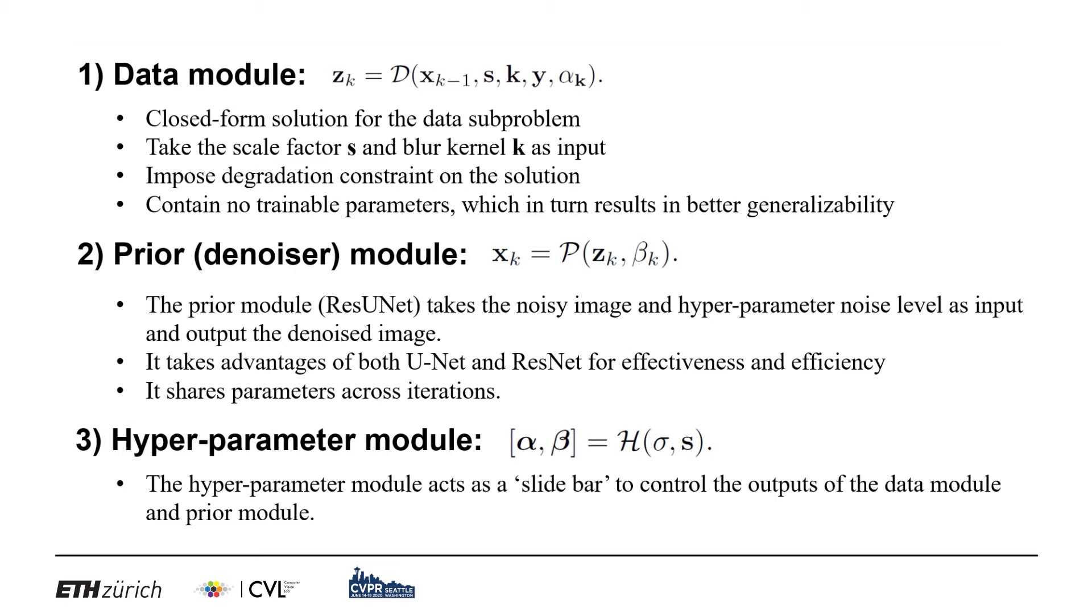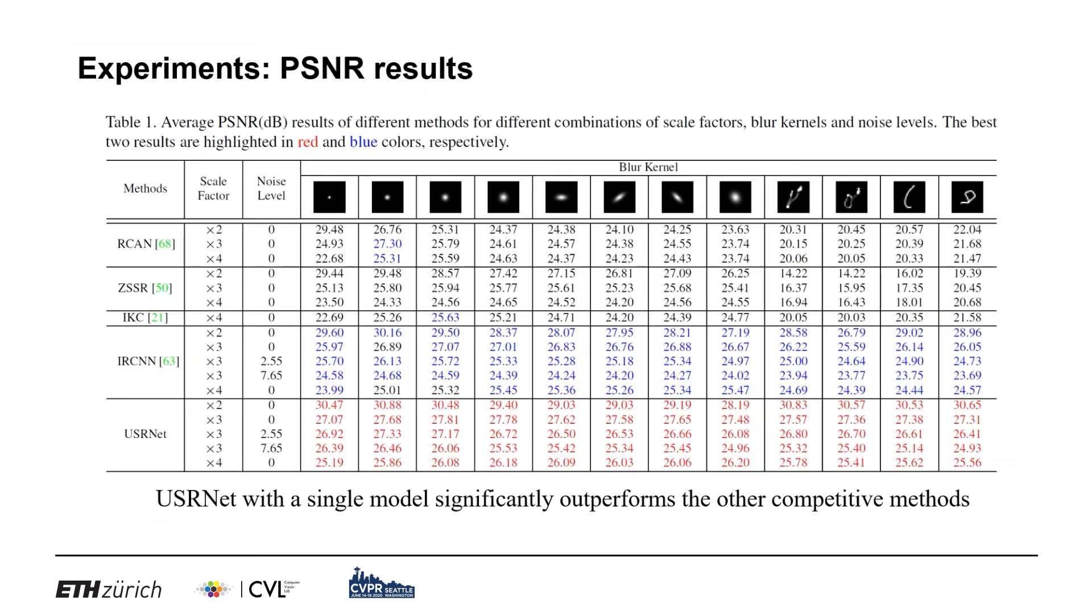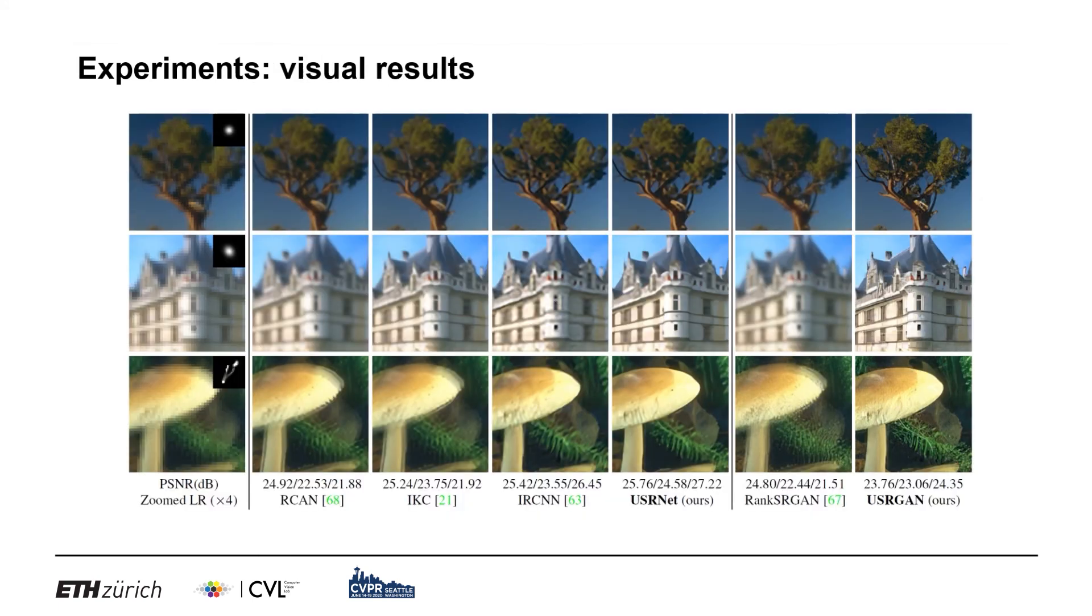USRNet consists of three main modules: data module, prior module, and hyperparameter module. The synthetic PSNR results and the real results are provided.